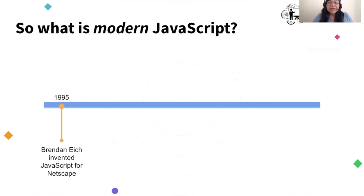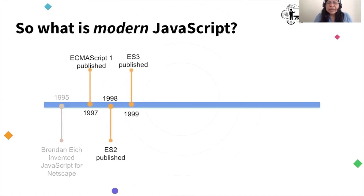We're going to start with a bit of history. Everything started in 1995, when Netscape Communications hired Brendan Eich to invent a language that they could use to add dynamic content to the web. So in 1995, JavaScript was created. After this, in 1997, Netscape sent a proposal for a standard to ECMA International, and in 1997, the first version of the standard was published.